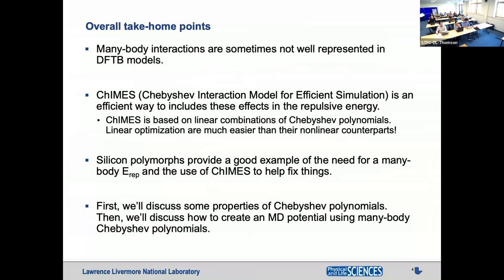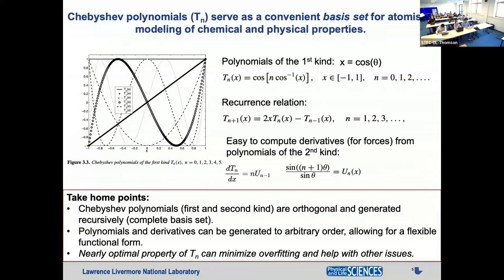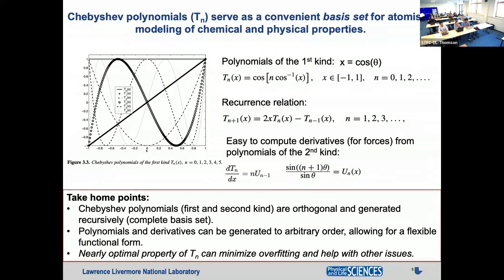We'll discuss how to create an MD potential using many-body Chebyshev polynomials — that's the context in which CHIMES was first created. Chebyshev polynomials are a convenient basis set for atomistic modeling with several useful properties: they are an orthogonal basis set, so you can approach completeness; they can be generated recursively, giving you a flexible functional form; and you can get derivatives while computing the polynomials for the energy expression, because Chebyshev polynomials of the second kind are related directly to those of the first kind.